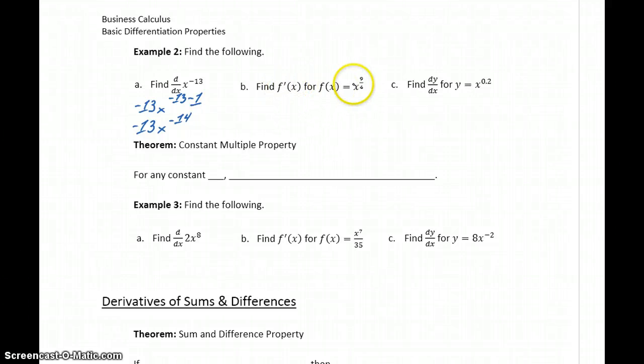Here we want to find f prime of x to the 9 fourths. So we bring that original exponent down in front, and we take x to the 9 fourths minus 1, which would become 9 fourths x to the 5 fourths.